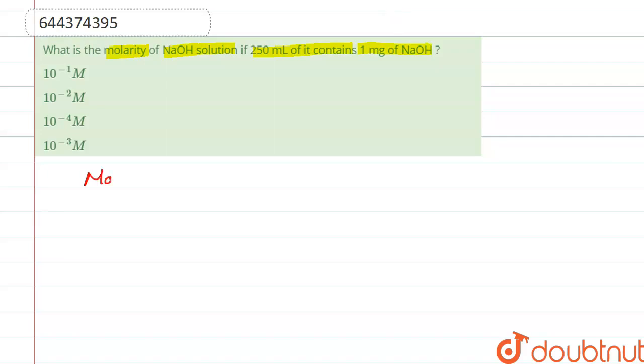Right, here mass of NaOH is given. Mass of NaOH is given, that is 1 mg, so we convert it. We multiply by 10 to the power minus 3, so it becomes 10 to the power minus 3 gram.